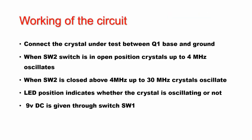The working of the circuit is shown here. Connect the crystal under test between the base of the Q1 transistor and ground. When SW2 switch is in the open position, crystals up to 4 MHz which are connected will oscillate. When SW2 is closed, above 4 MHz up to 30 MHz crystals oscillate. The LED indicates whether the crystal is oscillating or not, so one can easily test the condition of the crystal. A simple 9V DC supply is given through switch SW1.